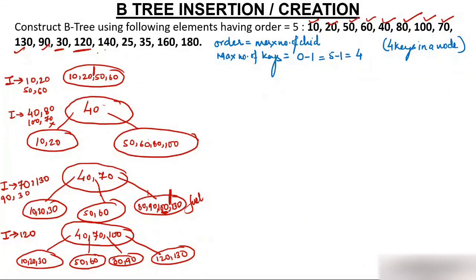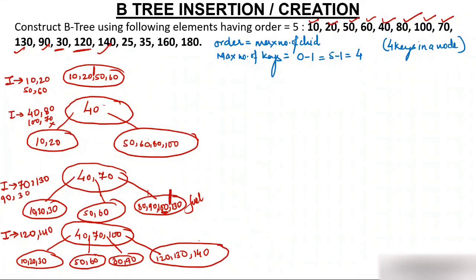Insert 140 — the node after 100 has 120, 130 and there is still space, so 140 goes there easily. Insert 25 — 25 goes between 20 and 30 in the leftmost child, so we write 25 there and shift 30. Left child is now 10, 20, 25, 30.